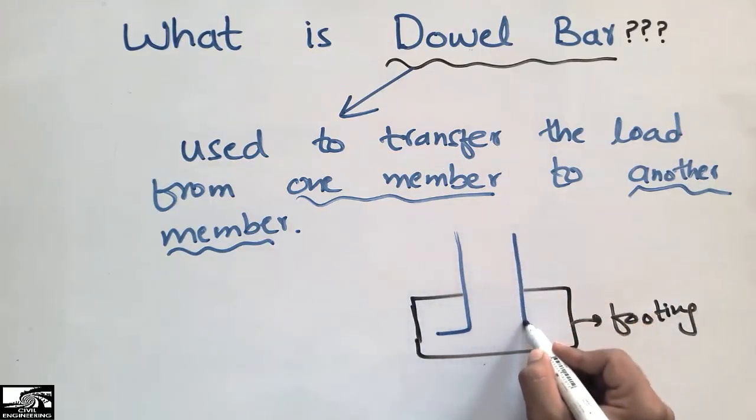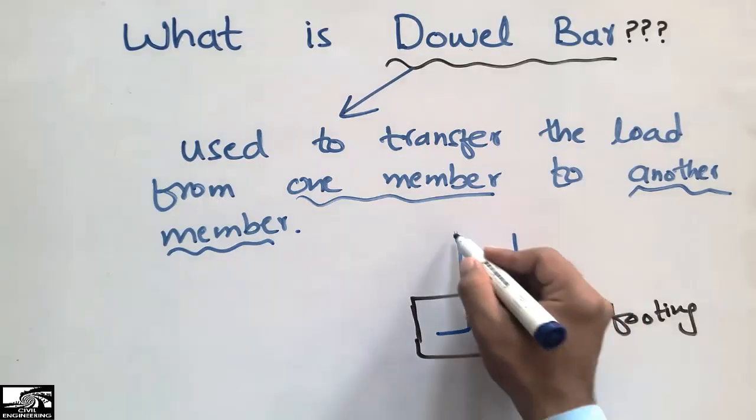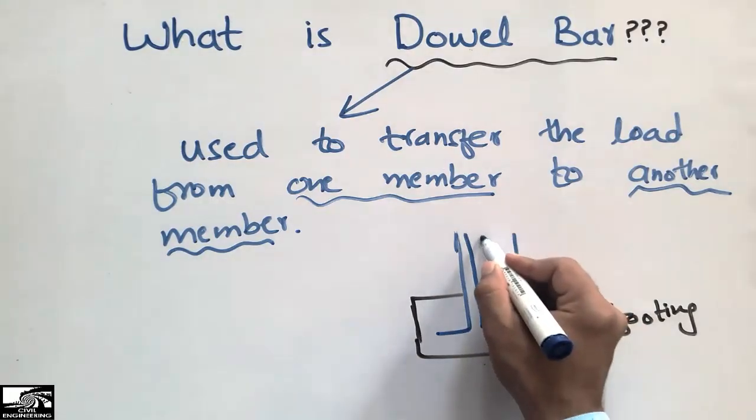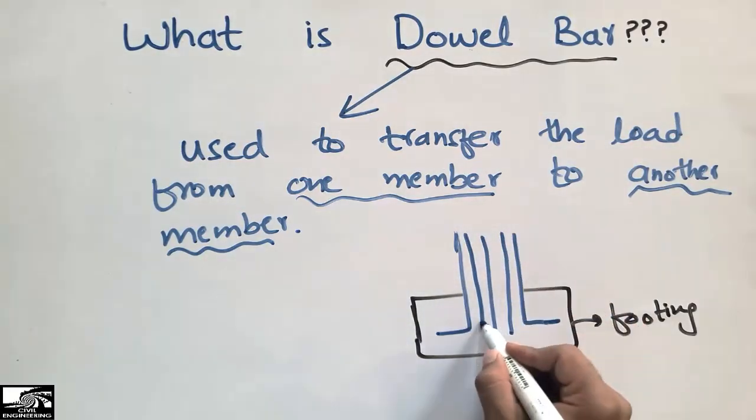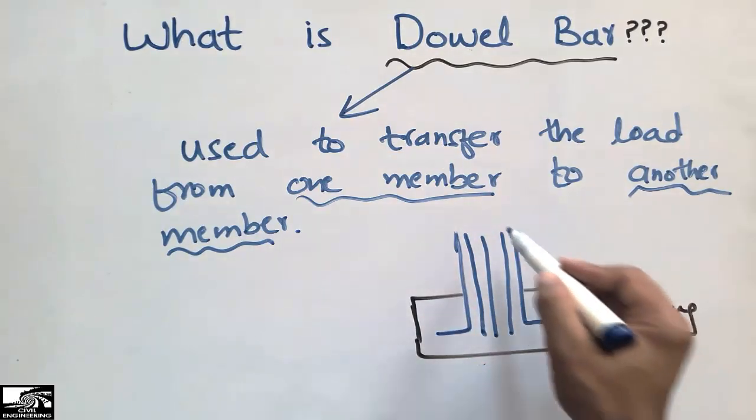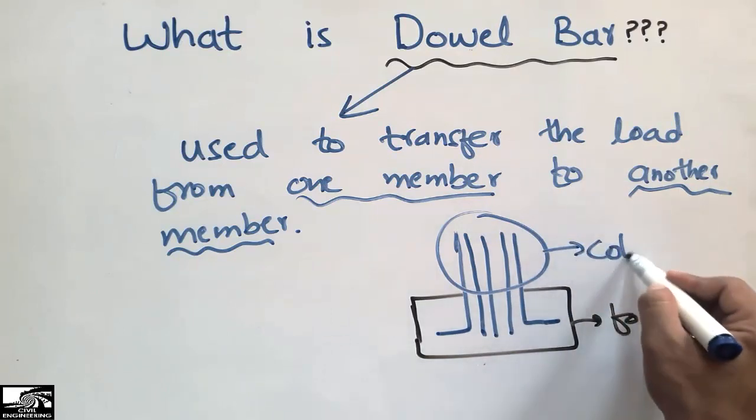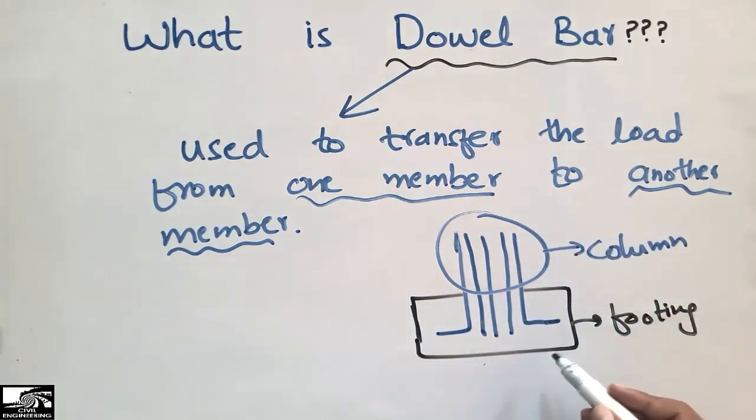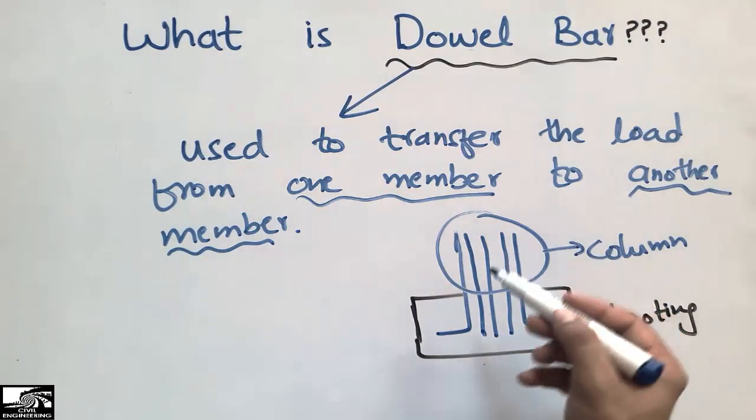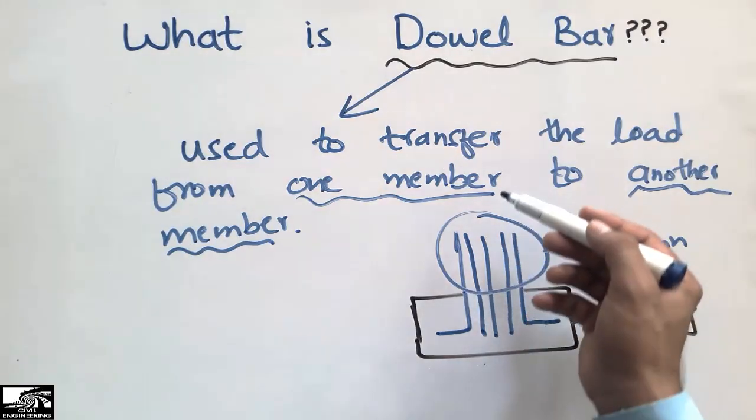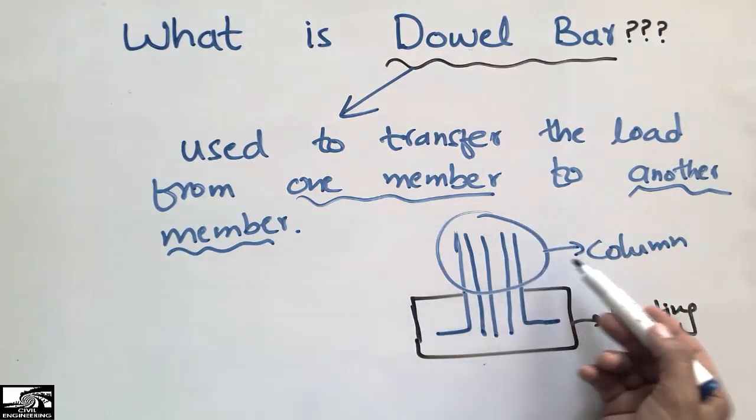These are the reinforcement of the footing. These are the reinforcement used to make the bond between the footing and the column. This is the column at the top and this is the footing at the bottom. This steel bar transfers the load from one member.